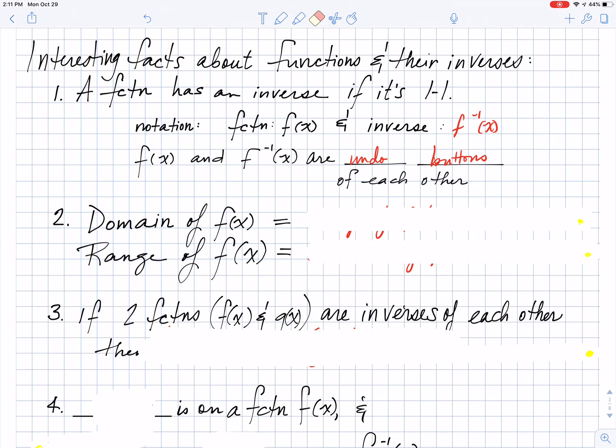So when we look at interesting fact number two, then when you think about something that is an undo button of domain, you might think of range. And so what we have here is that the domain of the original f of x is going to be the same thing as the range of my inverse function. The range of my original will be the domain of my inverse.